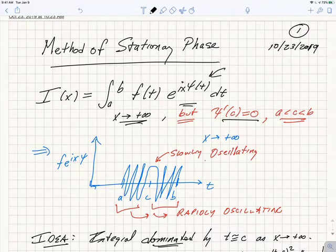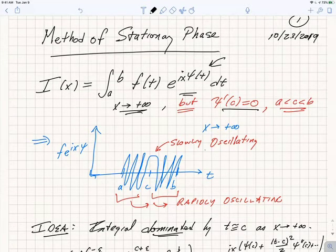If we think about the behavior of the function we're integrating, f(t)e^(ixψ(t)), as x gets large, then typically this is going to oscillate wildly. However, close to the point where c has a critical point, it doesn't oscillate quite as wildly.